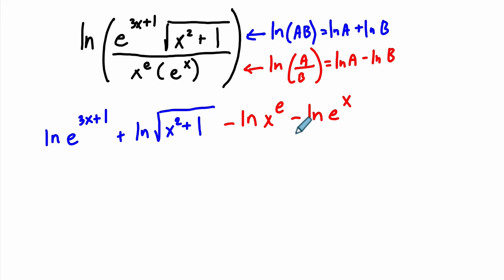And if you're feeling a little shaky about that, you're saying, well, aren't these two multiplied? Doesn't the first law apply? You could write it like this, where you subtract the natural log of x to the e plus the natural log of e to the x. In other words, you're subtracting the product of those two things.